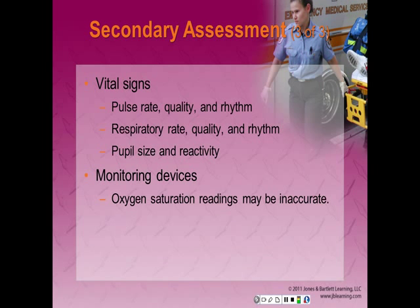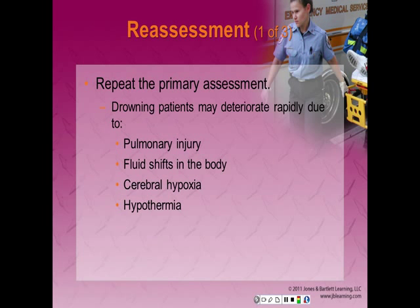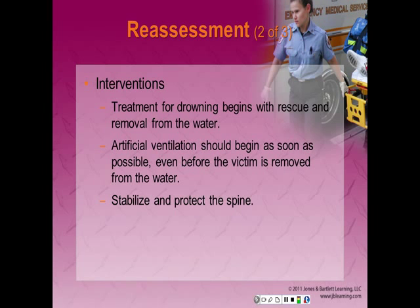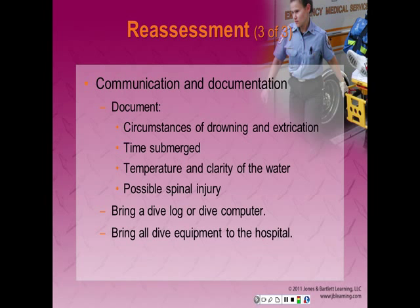Regarding monitoring devices, remember oxygen saturation readings may produce a false low because of hypoperfusion or shivering. Drowning patients may deteriorate rapidly due to pulmonary injury, fluid shifts in the body, cerebral hypoxia, hypothermia, air embolism, or decompression sickness — patients may decompensate quickly. Assess mental status constantly and assess vital signs every 5 minutes, paying particular attention to respirations and breath sounds. Treatment for drowning begins with rescue and removal from the water — artificial ventilation should begin as soon as possible, even before the victim is removed. Stabilize and protect the spine, especially after a long fall or a dive. Document the circumstances of the drowning and extrication, time submerged, temperature of the water, clarity of the water, and the possibility of spinal injury. Bring any dive log or dive computer to record the dive history, and bring all dive equipment to the hospital.